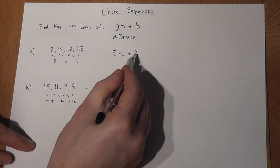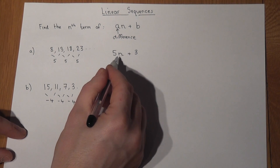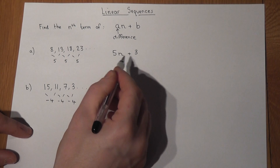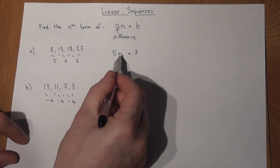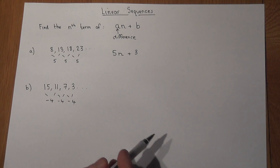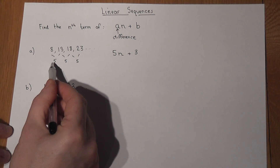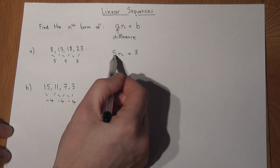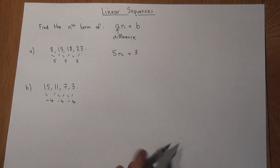If n is two, five times two is ten, plus three is thirteen. If n is three, five threes are fifteen, plus three is eighteen. So the value of n lets us find the sequence value for a given term. If I want the tenth term: five times ten is fifty, add three is fifty-three.